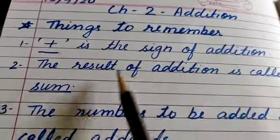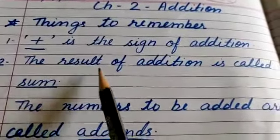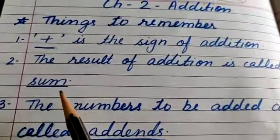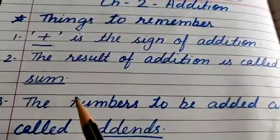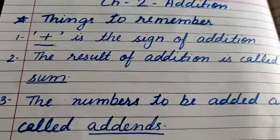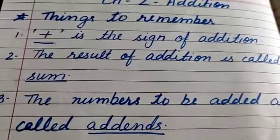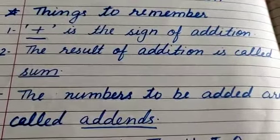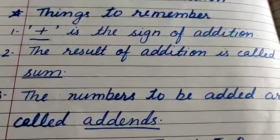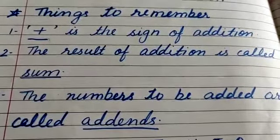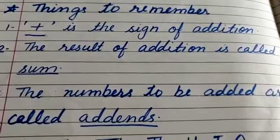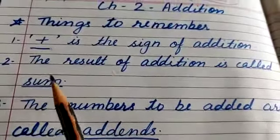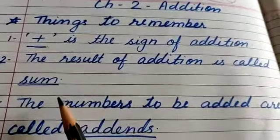Clear? Now second point: the result of the addition is called sum. The result is called sum. Some parents ask me to speak in English also, in Hindi also. So I am explaining in Hindi also. The result of addition is called sum.